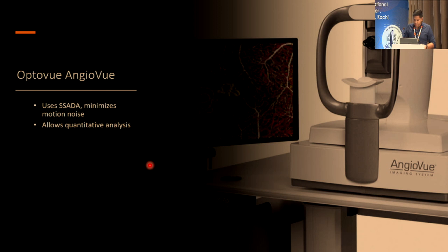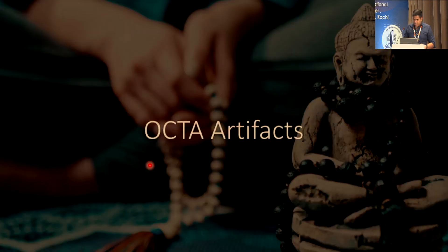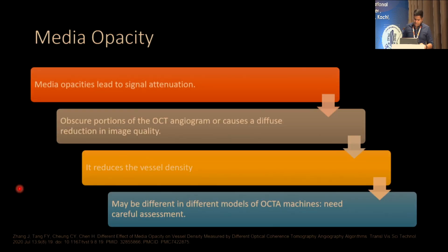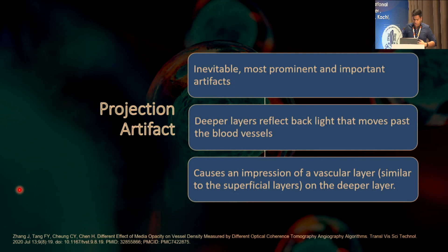Regarding OCTA artifacts: media opacities lead to signal attenuation, obscure portions of the OCT angiogram, or cause diffuse reduction of image quality, reducing vessel density. The effect differs between OCTA machine models. Once you start using a machine, you can analyze images over time and figure out how to take or position the scan to get better quality avoiding media opacities. Projection artifact is inevitable — the most prominent and important artifact. Deeper layers reflect backlight and move past blood vessels, causing the impression of vascular layer on deeper layers similar to superficial vascular layers.